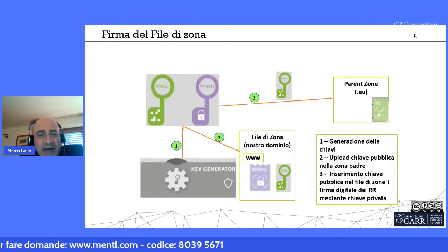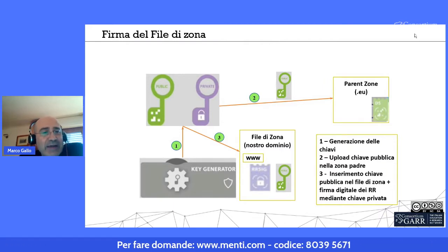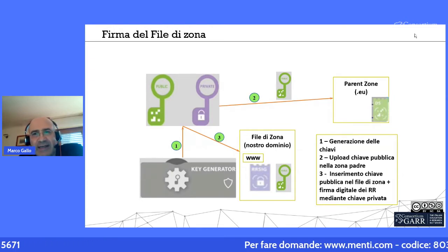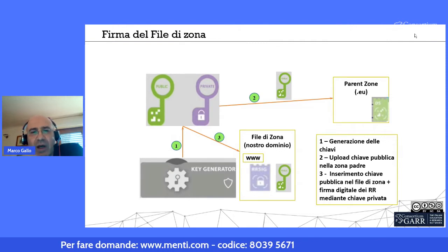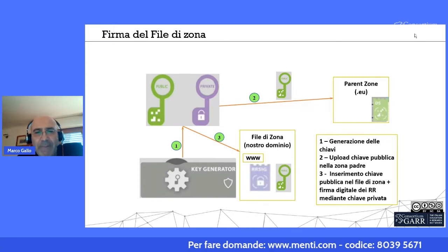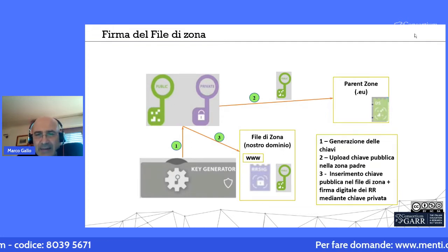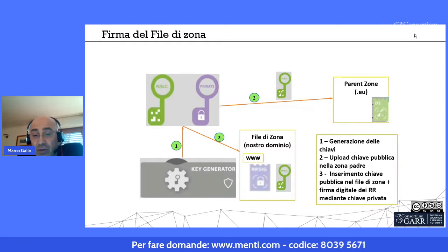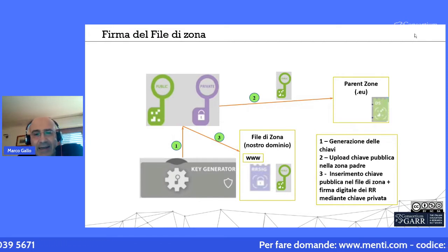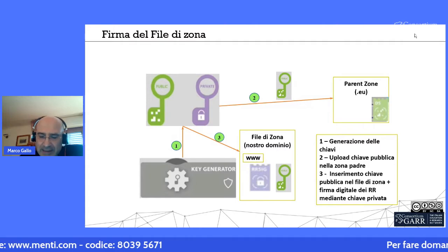Per firmare una zona si usa il DNS key generator (dnssec-keygen), che genera automaticamente una chiave costituita da una parte pubblica e una privata. Dalla chiave pubblica viene generato il record DS che viene uploadato sul top level domain (es. .eu), mentre la chiave privata genera le firme digitali incluse automaticamente nel file di zona. Nel file di zona viene inclusa anche la chiave pubblica, necessaria per la validazione mediante il record DS e per autenticare ogni singolo resource record.